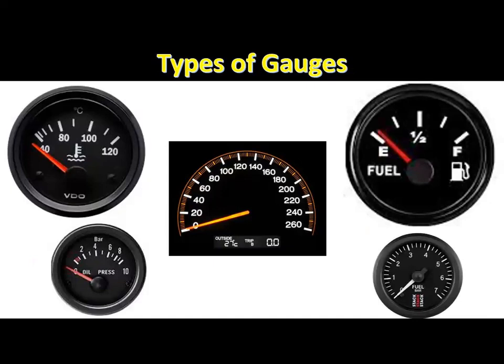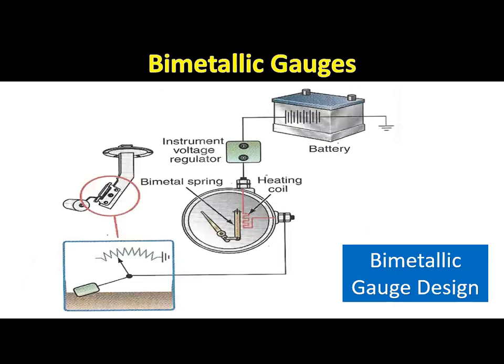Various types of gauges are used in instrument panels, each with different operating principles. Technicians must understand gauge operation to accurately diagnose and service each type and its related circuit. Most vehicles prior to 1980 are equipped with bimetallic gauges. In this type of gauge, the needle is linked to a bimetallic strip — two different metals fused together. As the strip is heated, the metals expand at different rates, causing the strip to bend and push the needle across the gauge scale. A heating coil surrounds the bimetallic strip, and the amount of heat supplied depends on current flow through that coil.